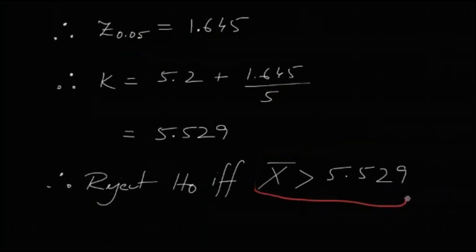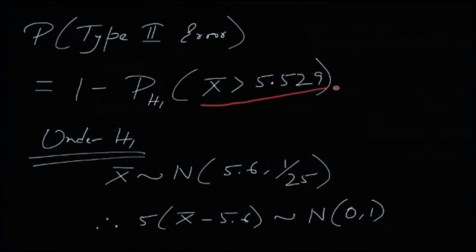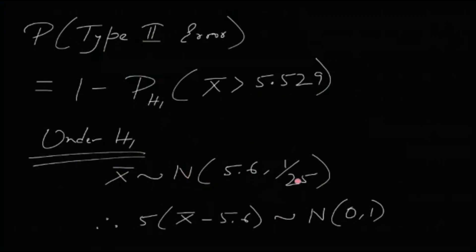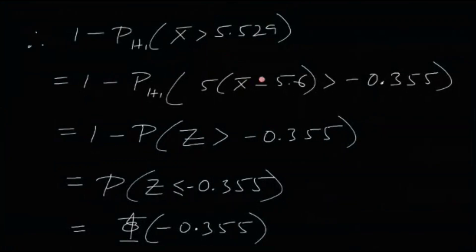The probability of type 2 error equals 1 minus the probability of rejecting H0 under H1. Under H1, x-bar follows normal(5.6, 1/25) because H1 states mu = 5.6. Therefore, 5(x-bar − 5.6) follows a standard normal distribution. Standardizing both sides of x-bar > 5.529 gives the critical value under H1.